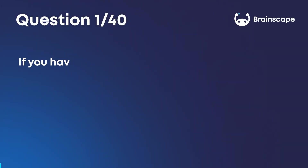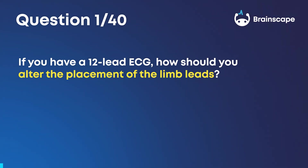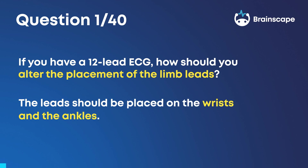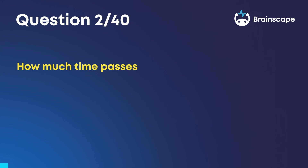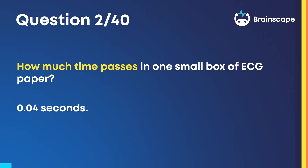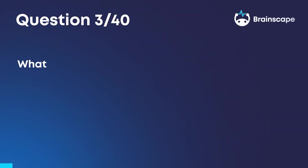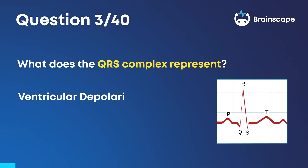Question 1: If you have a 12-lead ECG, how should you alter the placement of the limb leads? The leads should be placed on the wrists and the ankles. Question 2: How much time passes in one small box of ECG paper? 0.04 seconds. Question 3: What does the QRS complex represent? Ventricular depolarization.